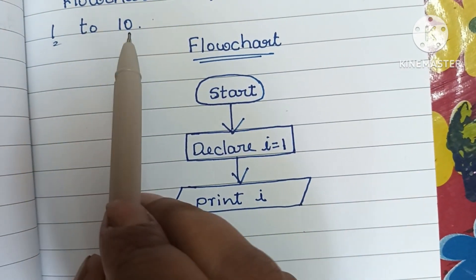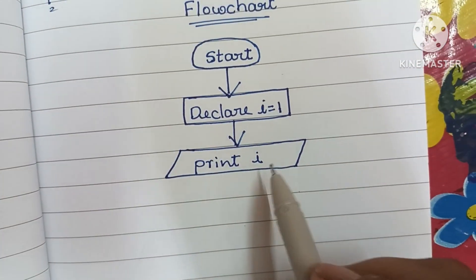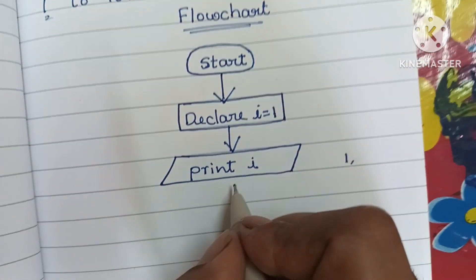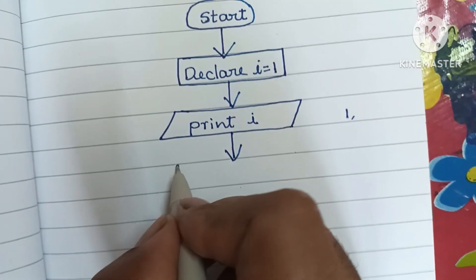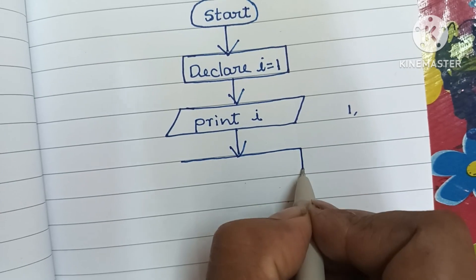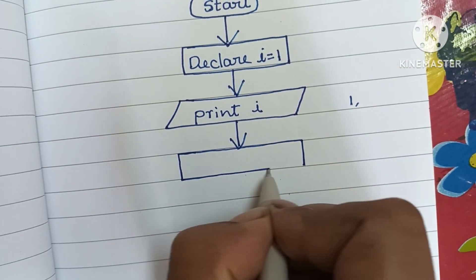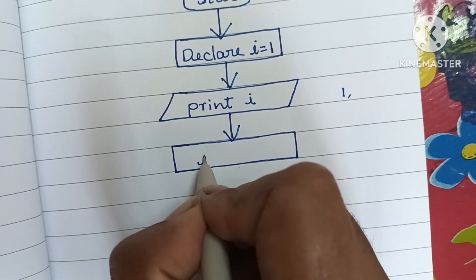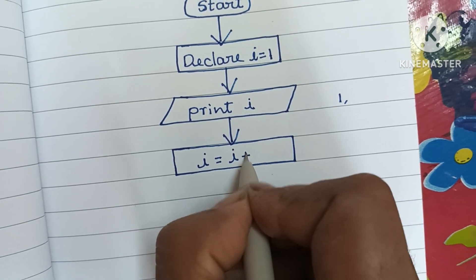We have to print numbers from 1 to 10, so initially we print i, which is 1. Next, we have to increase the value of i. The calculation process is always written within a rectangular shape. Within that we have to increase the value of i by 1.